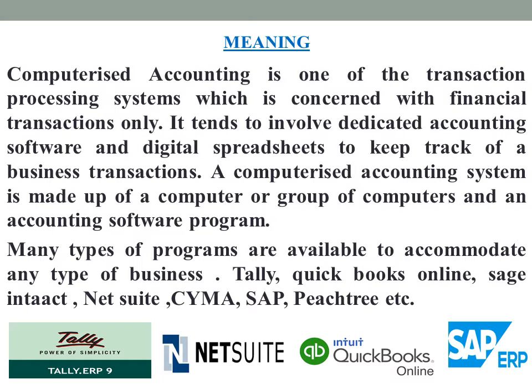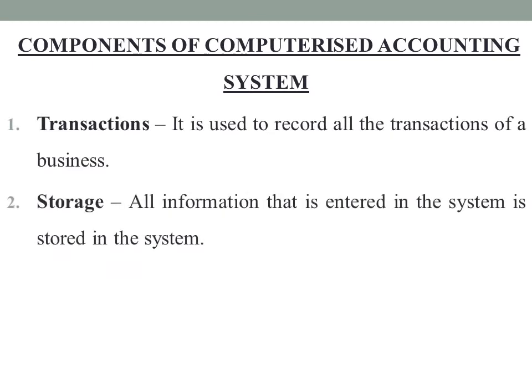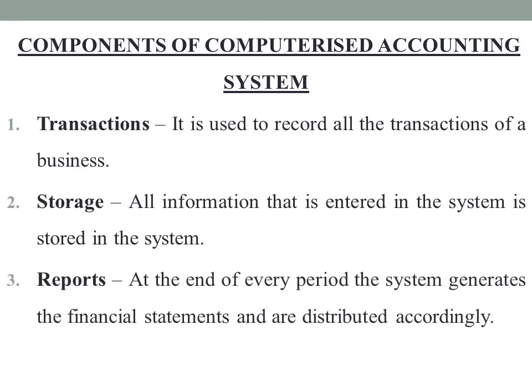This is about the basic meaning of computerized accounting. Next we will look into the main components of computerized accounting system. The three main components of a computerized accounting system are transactions, storage and reports.